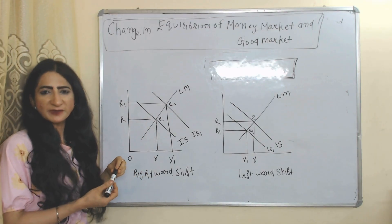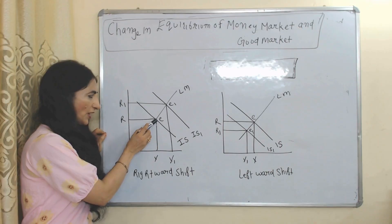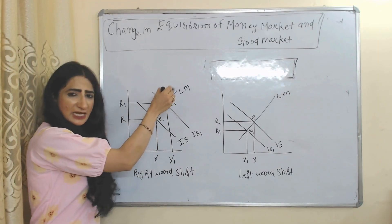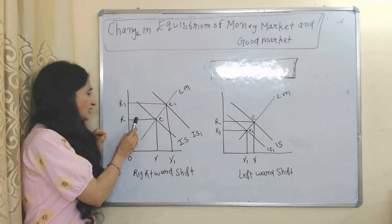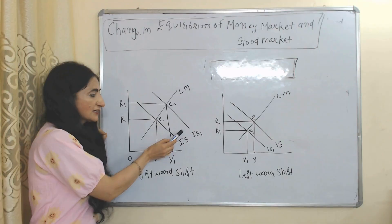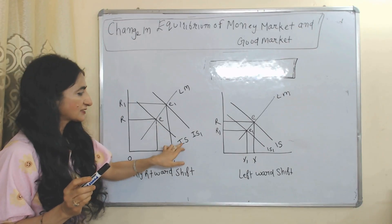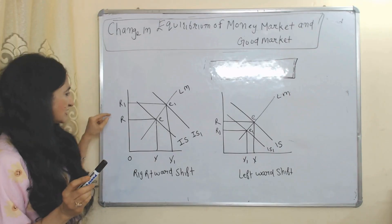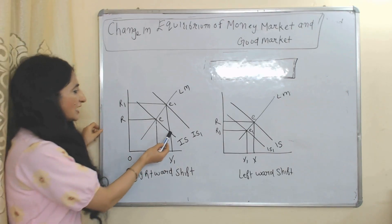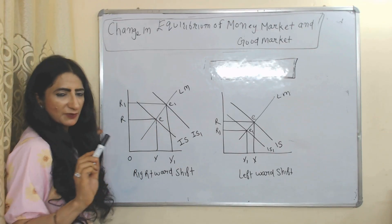Now we will see change in equilibrium of the money market and goods market. E is our initial equilibrium point where both markets are in equilibrium. If there is no change in the LM curve, an increase in income and interest rate will lead to a rightward shift in the IS curve. As income increases from Y to Y1 and interest rate increases from R to R1, the IS curve shifts from IS to IS1 and E1 becomes the new equilibrium point.